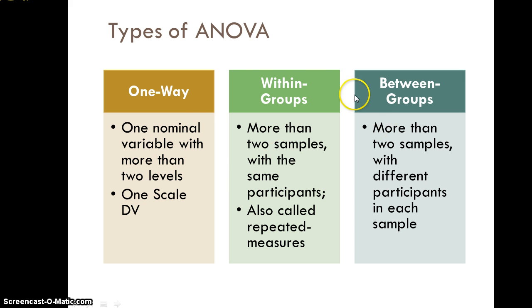We could also have a within-groups analysis of variance, where we have more than two samples with the same participants — each participant gets each level of the independent variable. This is analogous to a paired-samples t-test but with more than two groups; we can also call this repeated measures. For example, test scores at the beginning, middle, and end of the school year for the same people, looking for change in reading ability.